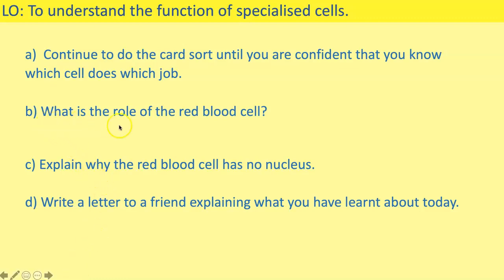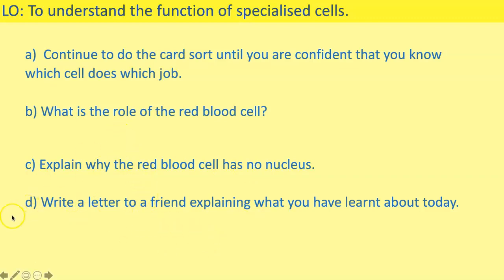Now we're going to answer some questions. First, describe the role of a red blood cell — that's its function. Next, explain why the red blood cell has no nucleus — that relates to its structure and special features. Then write a letter to a friend explaining what you've learned about today. Use your card sort and your knowledge organiser. Pause the video and have a go.